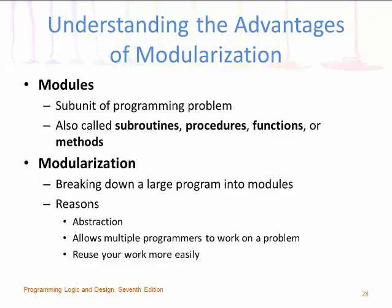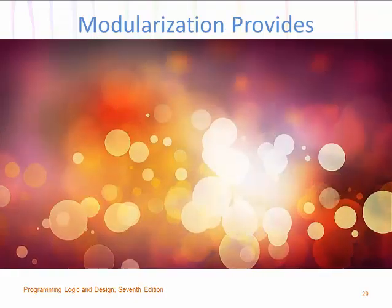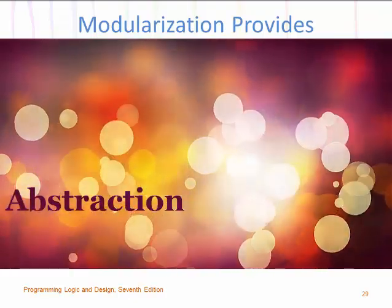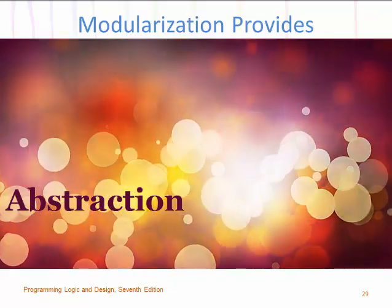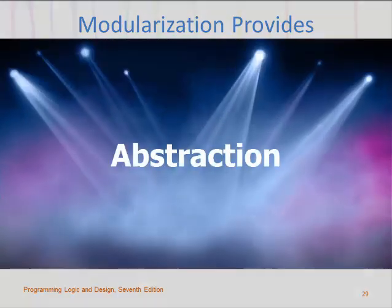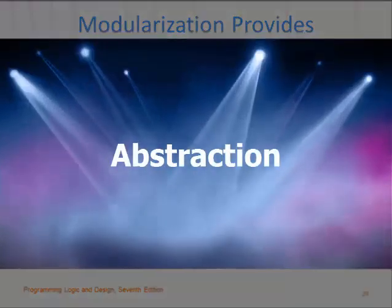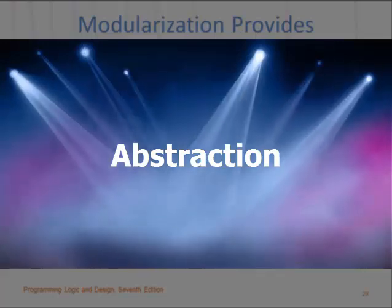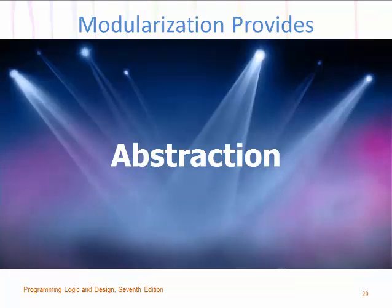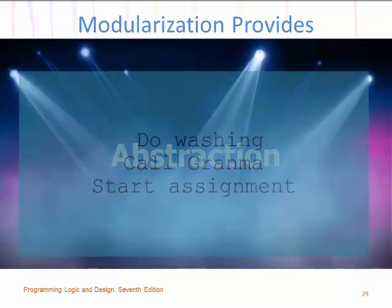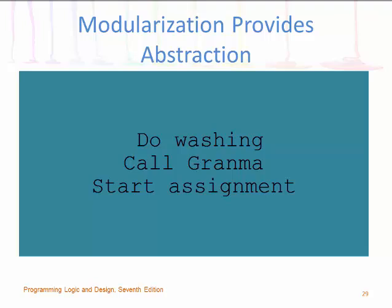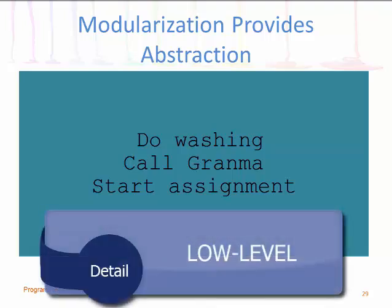Modulization also allows multiple programmers to work on one problem at a time, and you can reuse your work more easily. Modulization provides abstraction. One reason that modularized programs are easier to understand is that they enable a user to see the big picture. Abstraction is the process of paying attention to important properties while ignoring non-essential details. Life would be incredibly tedious without abstraction — it makes complex tasks look simple.